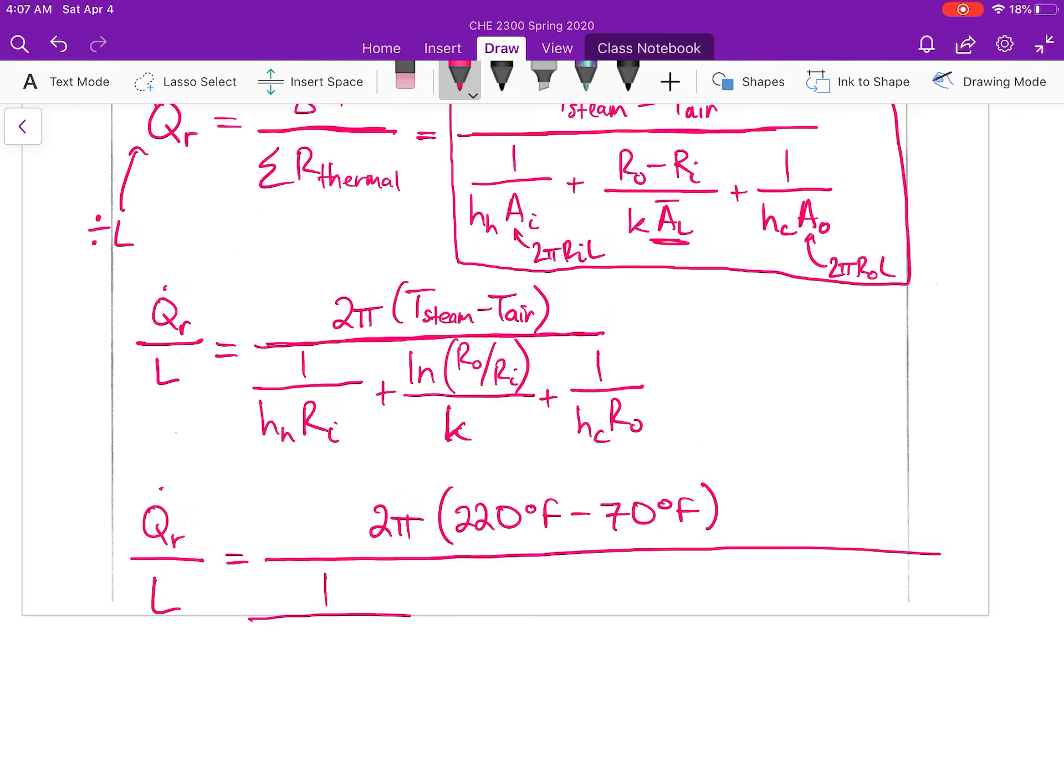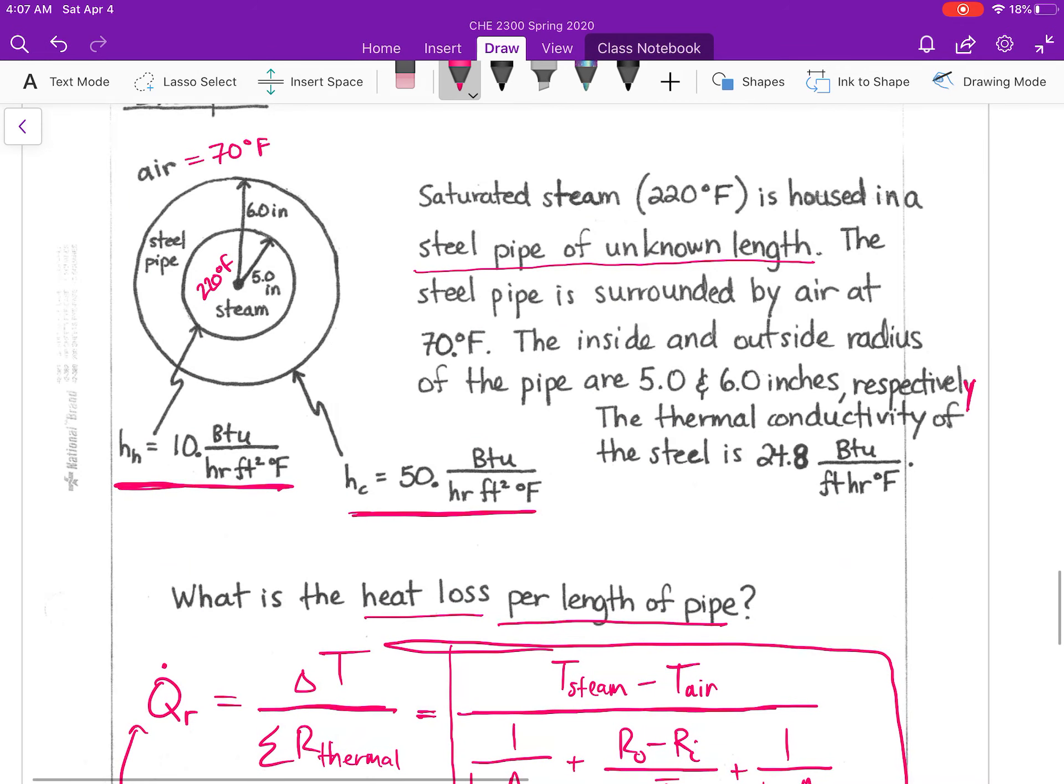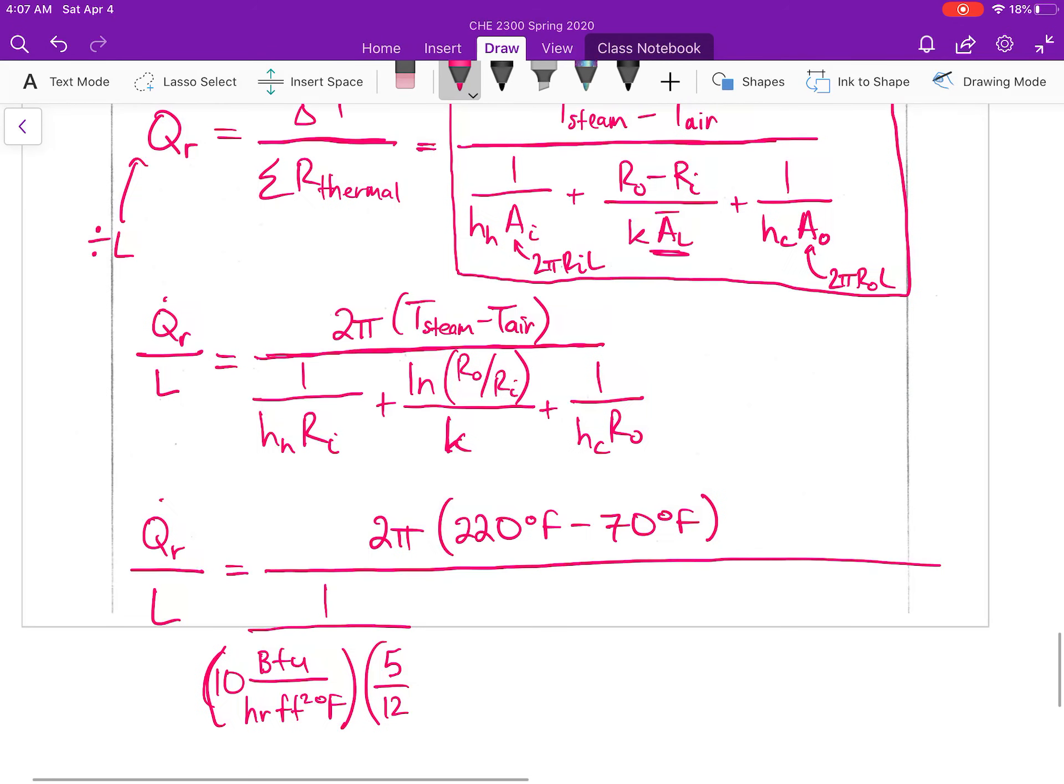All of that is divided by 1 over the convective heat transfer coefficient on the inside of the pipe, in BTUs per hour foot squared degrees Fahrenheit, multiplied by the inside radius of the pipe.